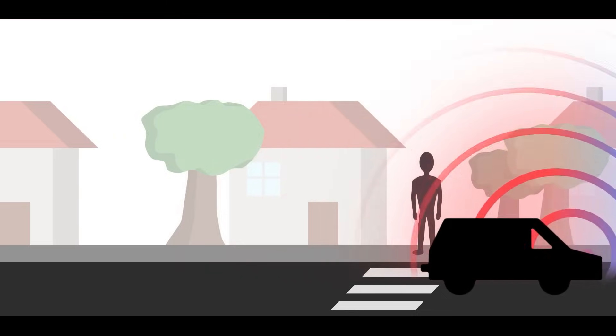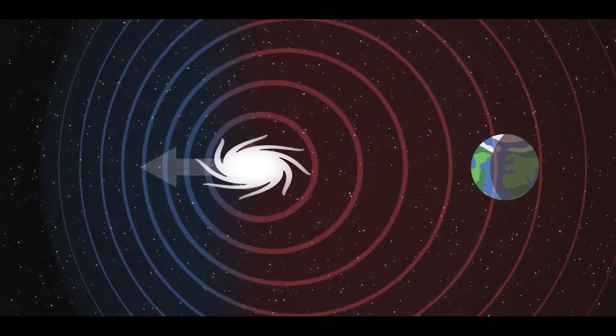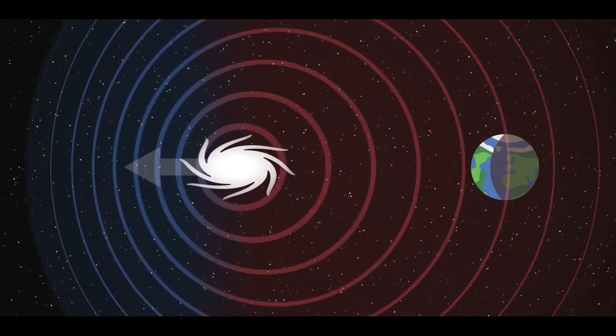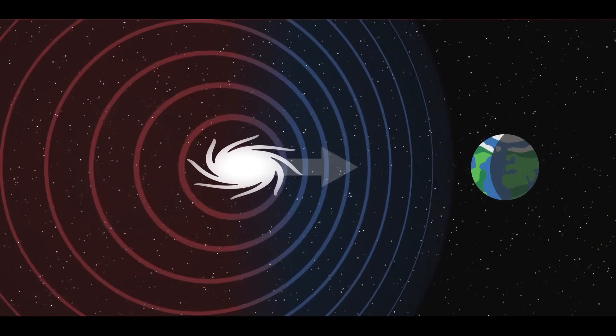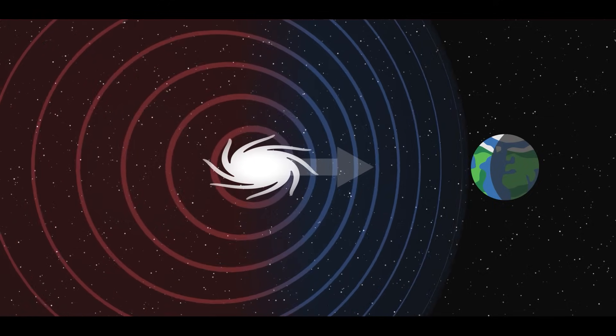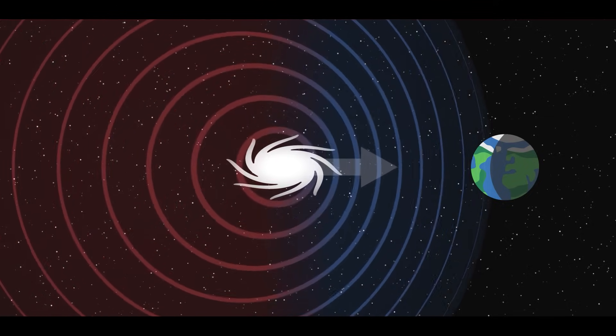For astronomers, the Doppler effect is crucial. By using stars as reference points, they can detect anomalies in the wavelengths they observe. If the wavelengths are increasing, it means the object is moving away, resulting in a red shift. Conversely, if the wavelengths are decreasing, it indicates the object is moving toward us, resulting in a blue shift.